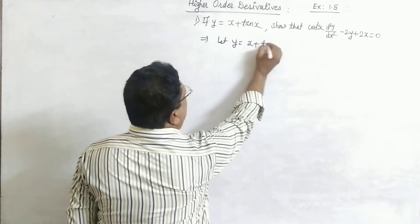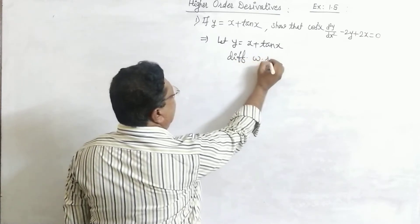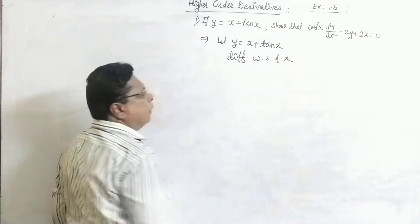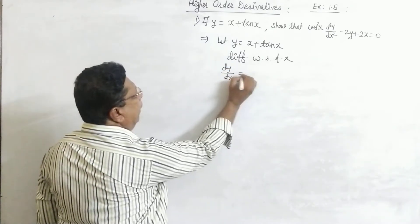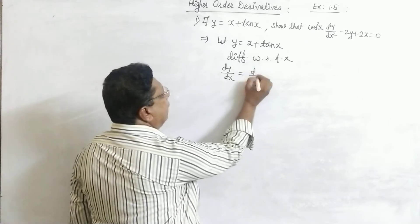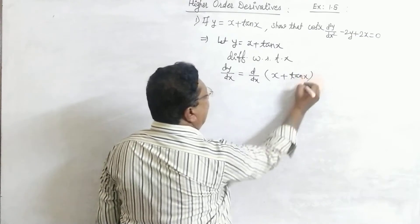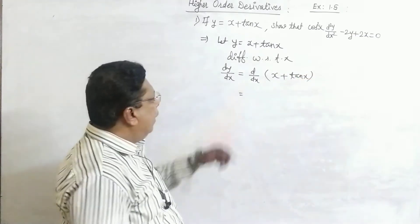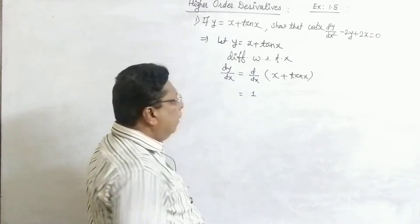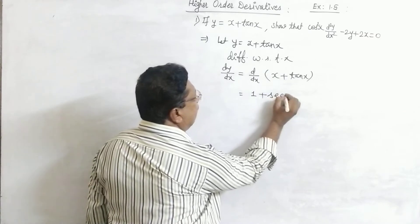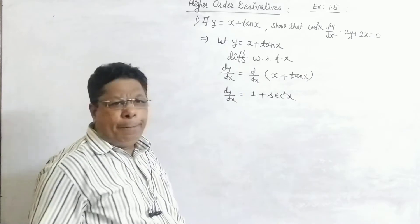Take the given function: y equals x plus tan(x). Differentiate with respect to x. The derivative of y with respect to x — on the right hand side, d/dx of (x + tan(x)) equals 1 plus derivative of tan(x). Derivative of x with respect to x is 1, plus derivative of tan(x) is sec²x. This is the value of dy/dx.